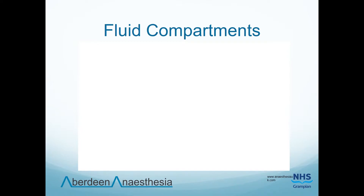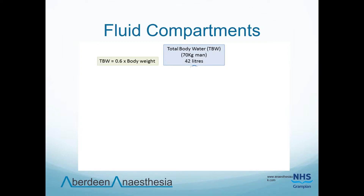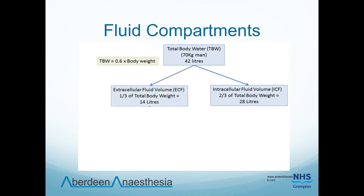We will now look at the classic compartment model of fluids. The total body water is approximately 60% of total body weight, meaning a 70 kg man contains roughly 42 litres of water. Classically, we divide body fluid into two main compartments: the intracellular fluid, which makes up two thirds of the volume, and the extracellular fluid, which makes up a third. The extracellular is then subdivided into the interstitial fluid, which makes up three quarters, and the plasma, which makes up a quarter.